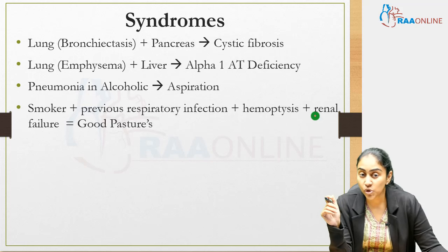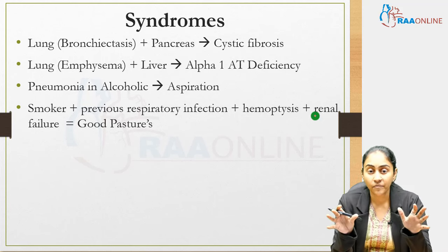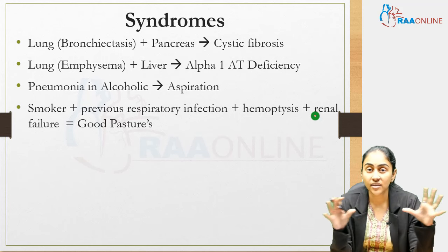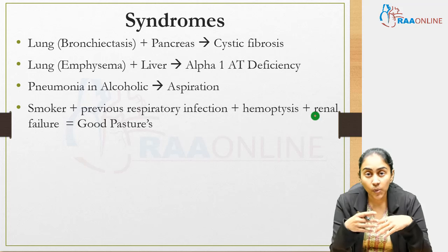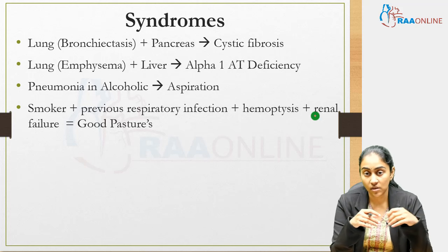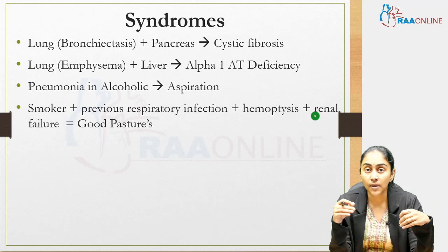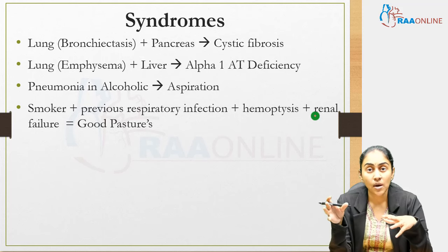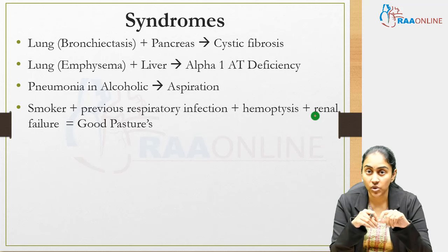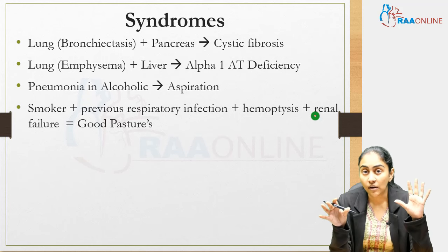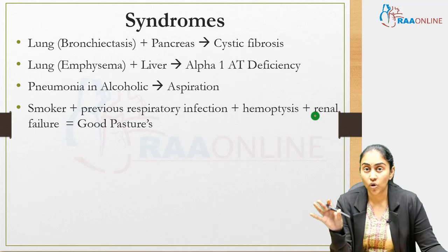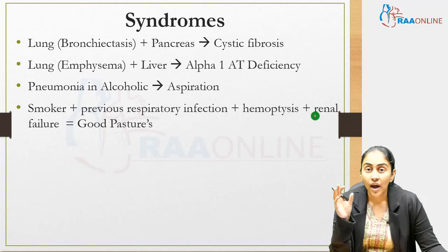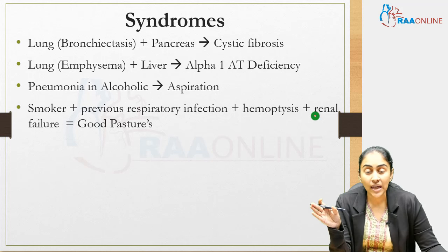When hemoptysis is described in a smoker and the history reveals a recent respiratory tract infection, with urine examination showing significant hematuria, proteinuria, and elevated creatinine — this picture of smoker, hemoptysis, renal failure, glomerulonephritis, and a previous respiratory infection points to Goodpasture's syndrome.